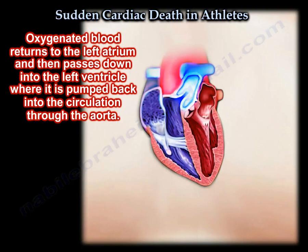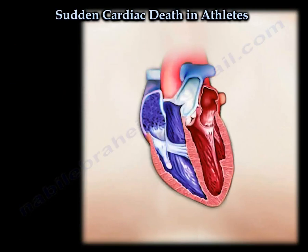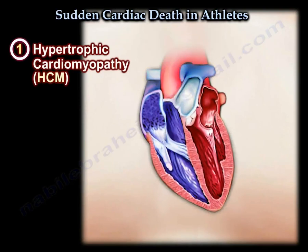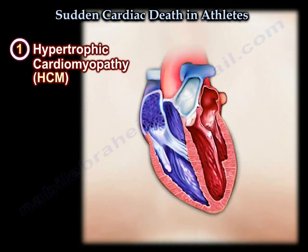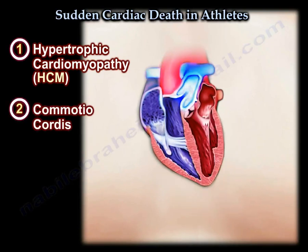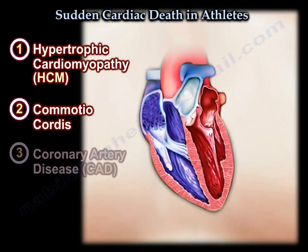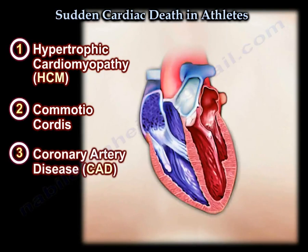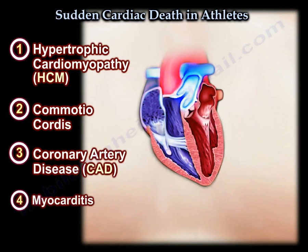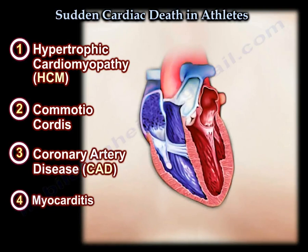The oxygenated blood returns to the left atrium and then passes down into the left ventricle where it's pumped back into the circulation through the aorta. Many conditions may lead to sudden cardiac death. One of them is hypertrophic cardiomyopathy. Another one is commotio cordis. A patient may have coronary artery disease, myocarditis, or others.